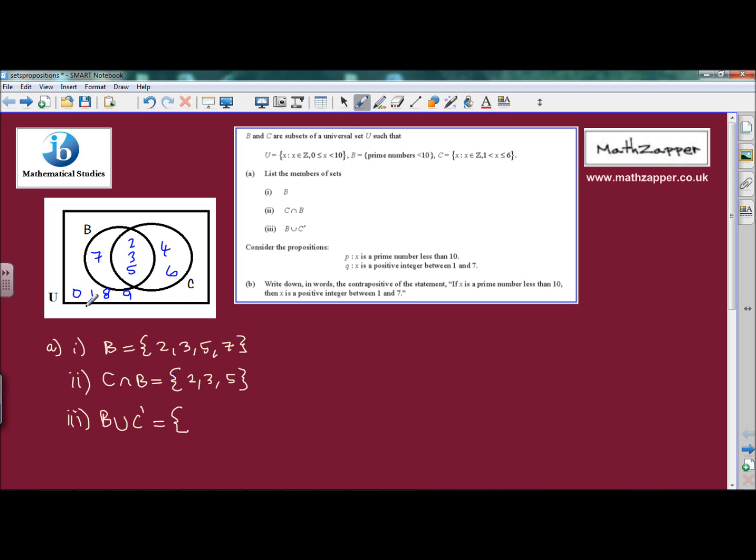And again, because we've got the Venn diagram we can put these numbers in order. So the smallest number is 0, then 1, then 2, 3, 5 and 7, and finally 8 and 9.